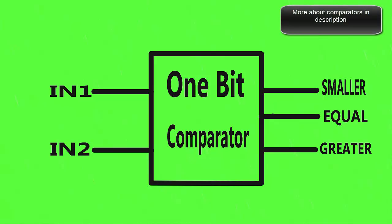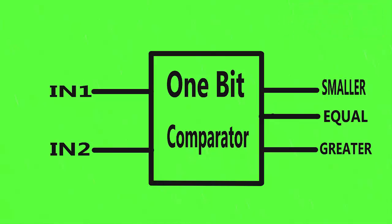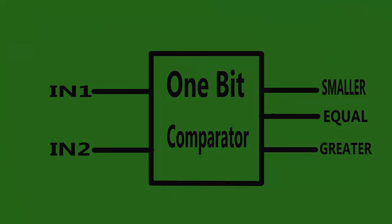If input1 is greater than input2, then the greater output gets high. If input1 and input2 are equal, then the equal output gets high. And if input1 is smaller than input2, then the smaller output gets high.